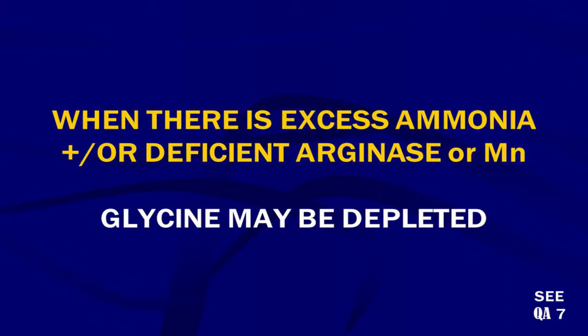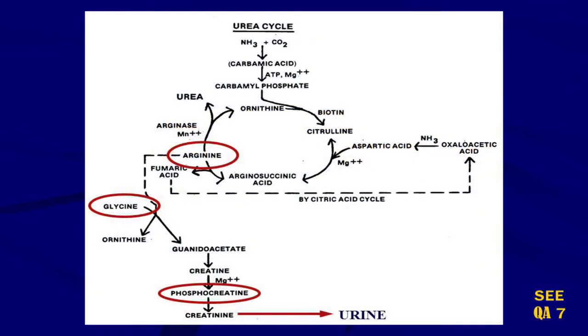When there's excess ammonia, or deficient arginase or manganese — which helps to get rid of ammonia — glycine may be depleted. Glycine is another inhibitory neurotransmitter. The urea cycle combines ammonia and carbon dioxide, generates a molecule called arginine, which is worked on by an enzyme called arginase, a manganese-dependent enzyme.